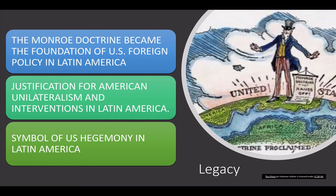The Monroe Doctrine met with tacit British approval. The British Royal Navy enforced it as part of the wider Pax Britannica to secure neutrality of the seas, in line with developing British policy of laissez-faire against mercantilism. Outside the United States, Monroe's policy did not attract much attention because the United States was not powerful enough to enforce it in the early 19th century. However, in 1865, the Monroe Doctrine was invoked to support Mexican President Benito Juarez in a successful revolt against Emperor Maximilian, who had been appointed by the French government.